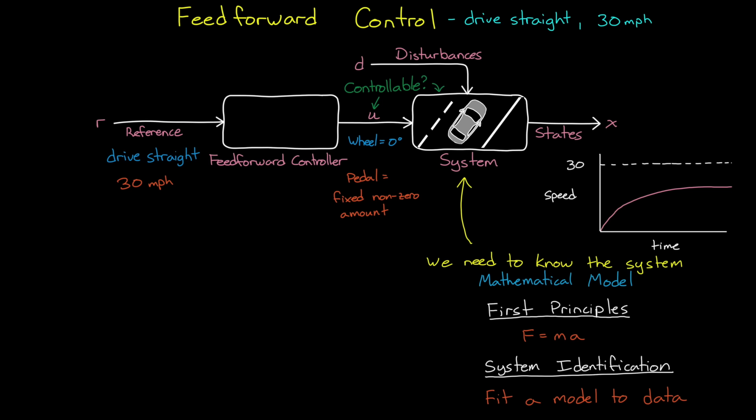Now, as an example of system identification, we could test the real car and record the speed it reaches, given different pedal positions. And then we could just fit a mathematical model to that data. Basically, speed is some function of the pedal position.